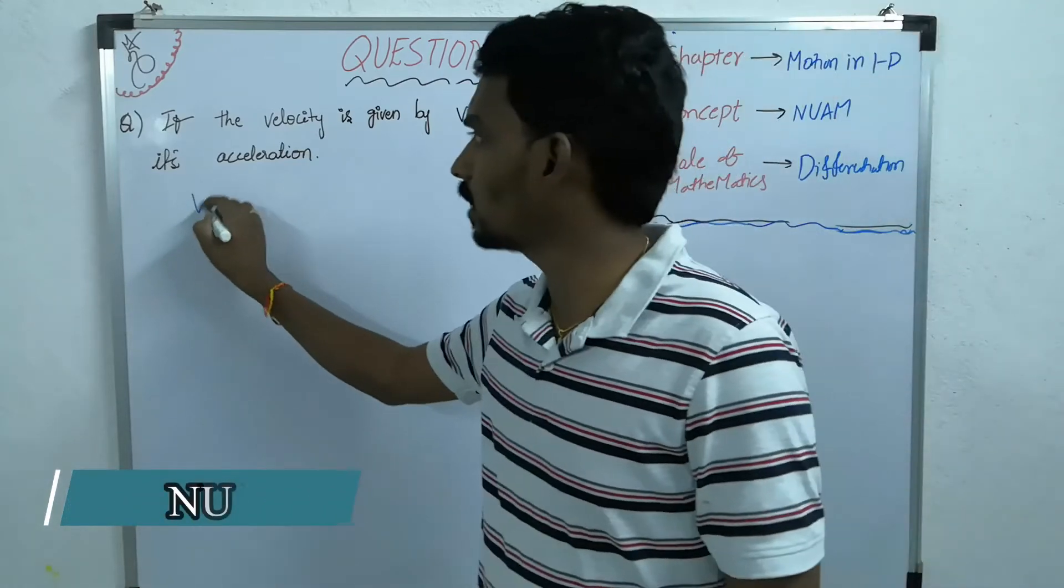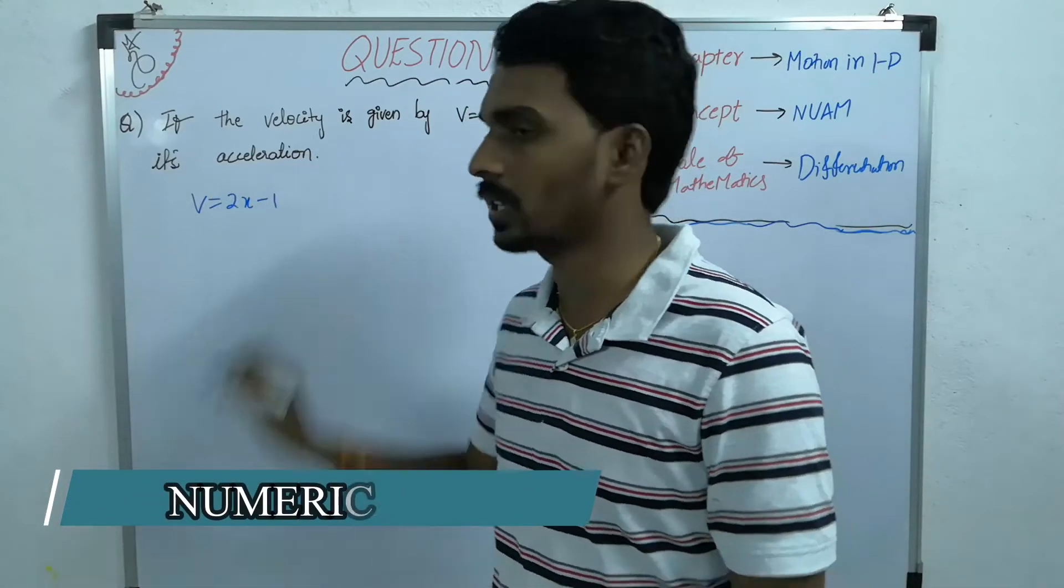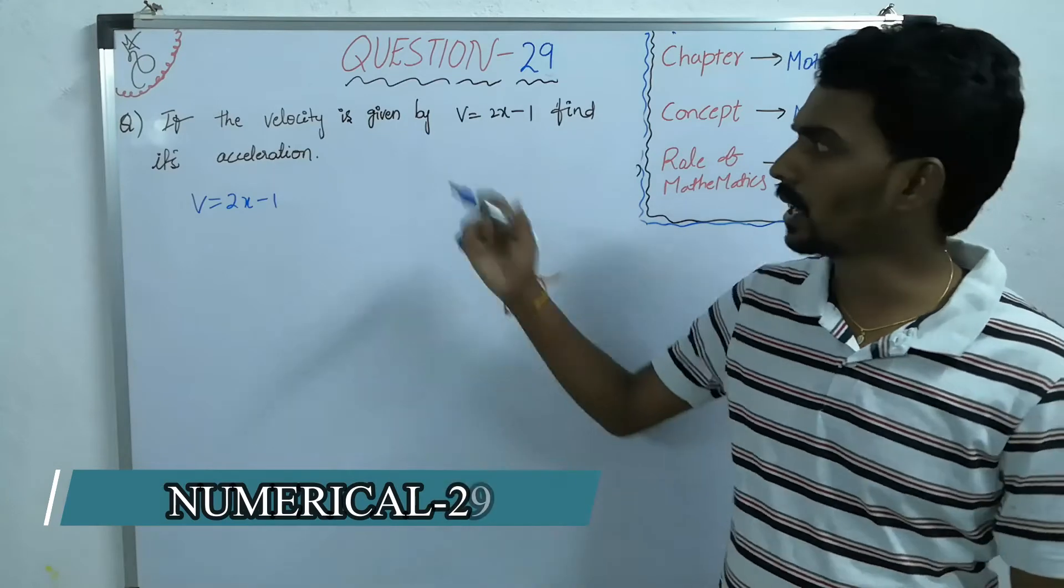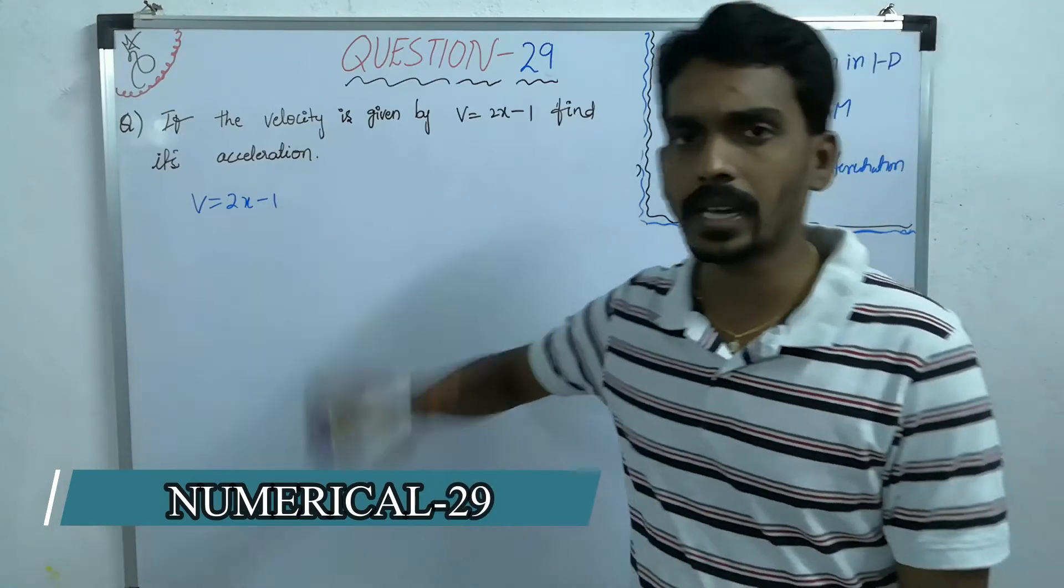Here, they are given the velocity as a function of displacement, v equal to 2x minus 1. Then they are asking acceleration.